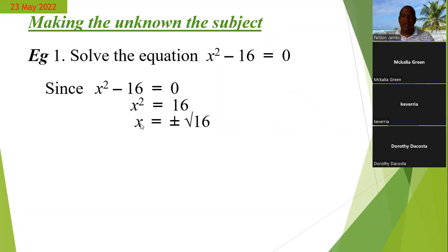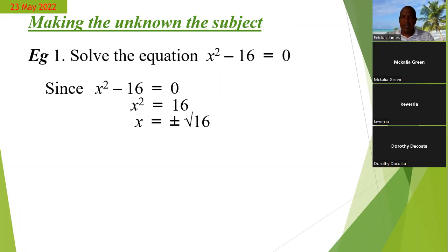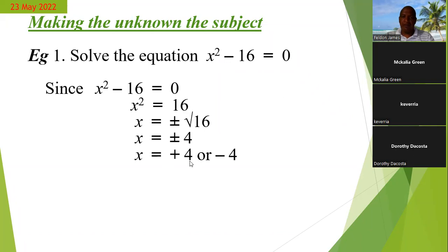Then to find x, you find the square root of 16. But when we are solving for a square root, we generally put a plus and a minus sign in front of the square root, because there are actually two numbers we can square to get 16. We can square negative 4 and positive 4, so the answer is x = +4 or x = −4.